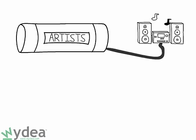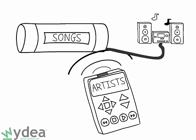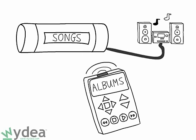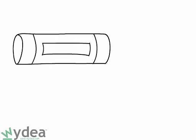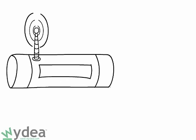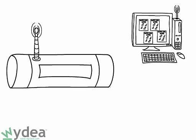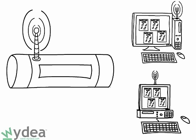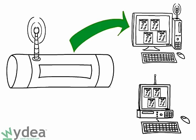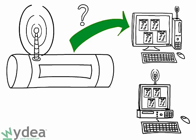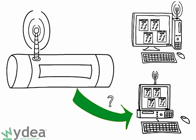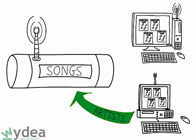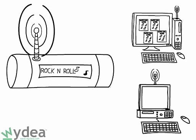Most media extender devices either have a built-in screen or remote that displays a variety of different types of information, including a list of artists, songs, and playlists you've created. A typical device searches your network for all available sources of music, basically any computer that is sharing music already. The media extender then asks the computer for a complete list of artists, songs, albums, and playlists. This process takes place quickly, and you can start playing music in a matter of seconds.